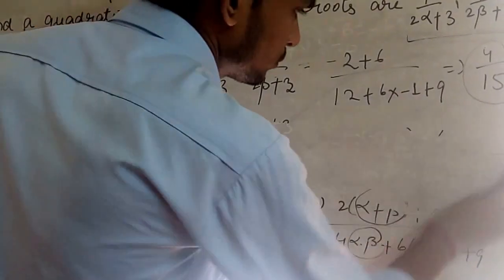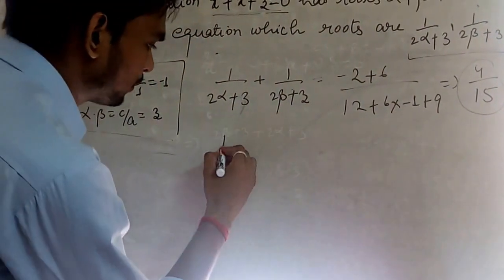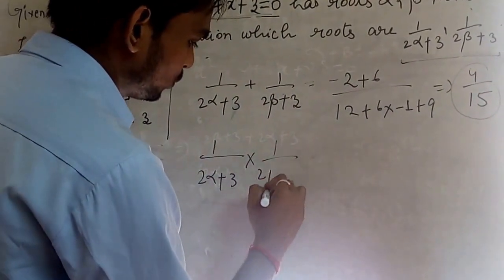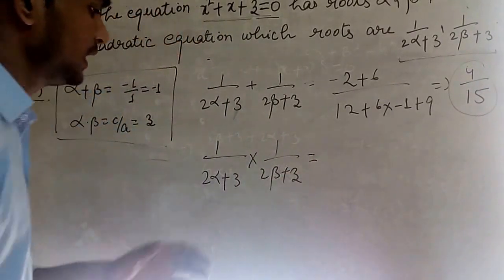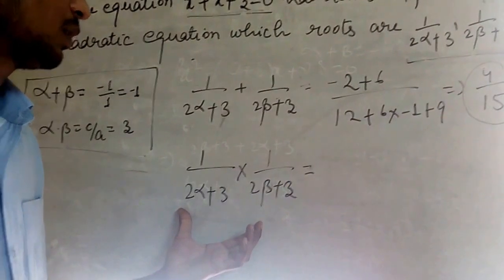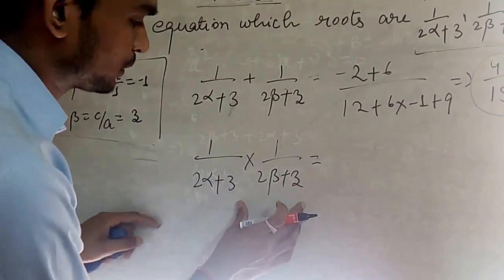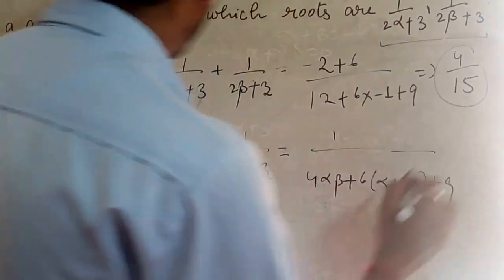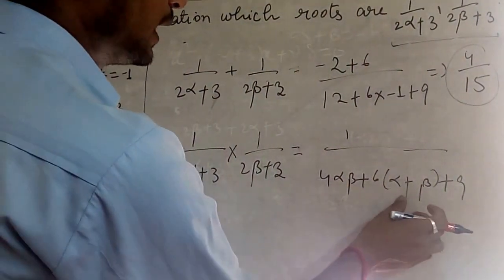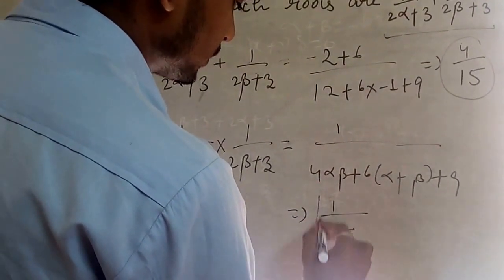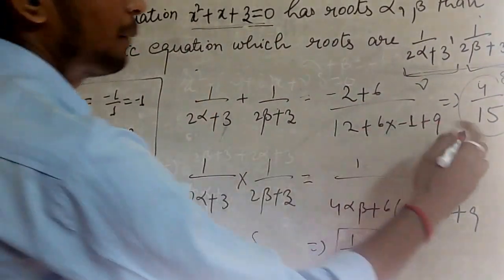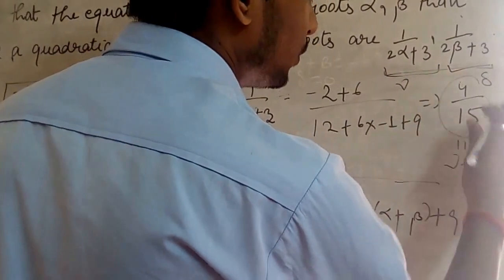We also require the product of the two new roots: gamma × delta = 1/[(2alpha + 3)(2beta + 3)] = 1/[4(alpha × beta) + 6(alpha + beta) + 9]. Substituting the values, we get 1/[4(3) + 6(−1) + 9] = 1/[12 − 6 + 9] = 1/15. So gamma × delta = 1/15.